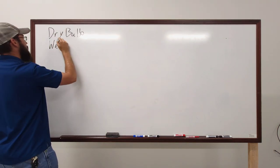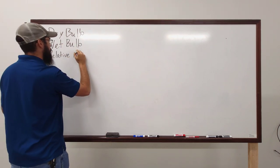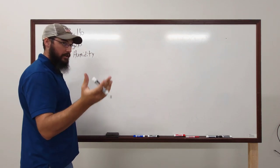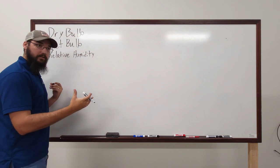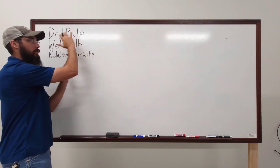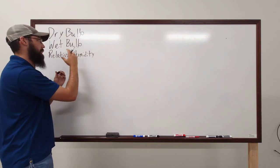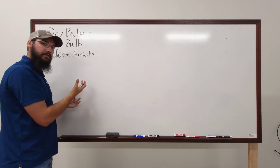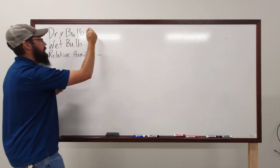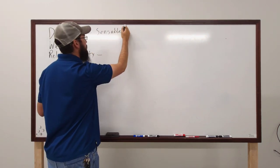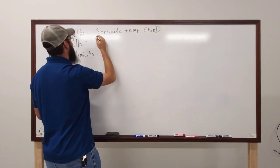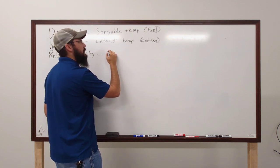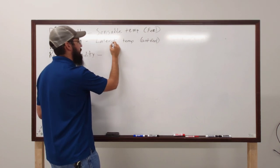The key things in psychrometrics are always dry bulb, wet bulb, and relative humidity — those are the critical key facts. We have almost a dozen variables we can work with, but these three mean the most to us. Dry bulb and relative humidity (RH, expressed as a percentage) are the two we most commonly see. Dry bulb is your sensible temperature — what you can feel. Wet bulb represents your latent heat.